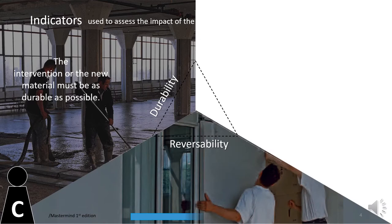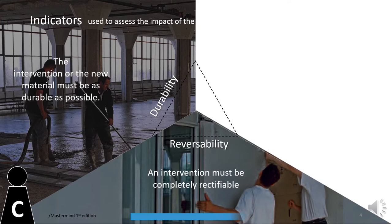Reversibility, or to what extent the intervention can be avoided to get back to the previous state, especially important when it's about high historical value. And lastly, re-treatability, or how new interventions remain possible to maintain the present state.